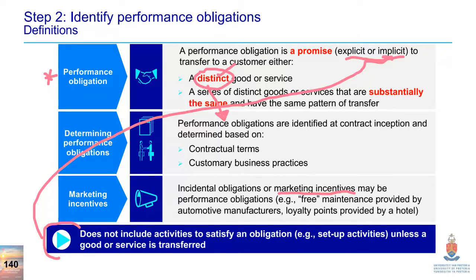If at the inception of the contract an implicit obligation is not identified, but it arises just after the contract is concluded, it would not be included as a performance obligation. Instead, it would be recorded as a liability. We wouldn't allocate revenue to it or recognize revenue when satisfied.